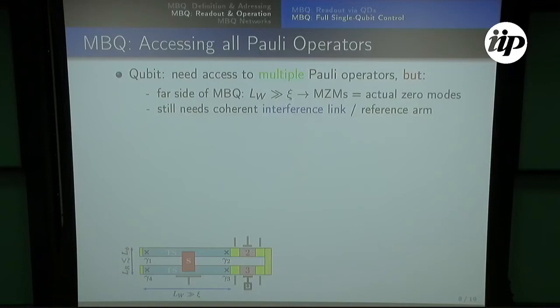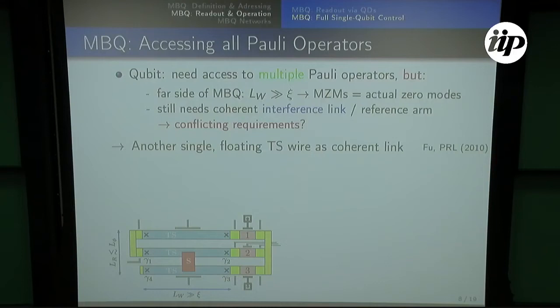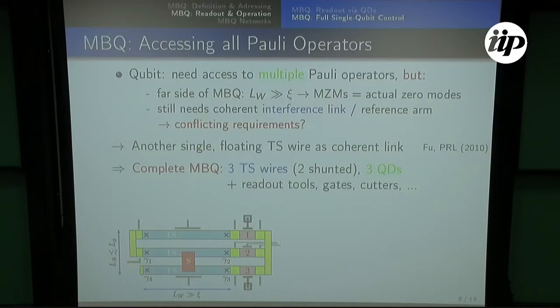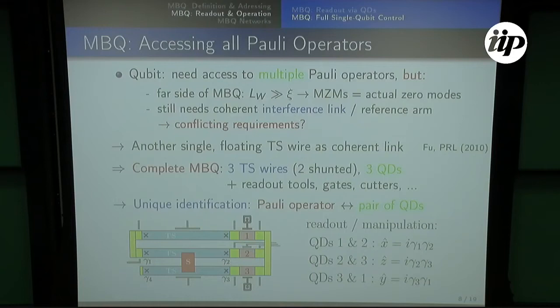To have access to all Pauli operators, it's kind of problematic because they are very far apart — if you want to address gamma_1, gamma_2, you have to approach a very long distance. The way to do this is to put another of these wires, and this is then really the full qubit: a complete Majorana box qubit with three TS wires, two of them connected, and three quantum dots with which you can really address the full qubit.